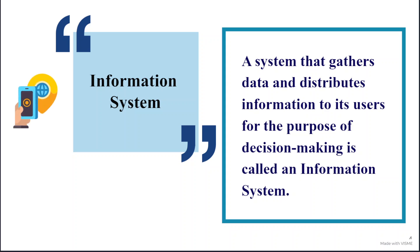Let me explain this using real-life examples. One major example is GPS, or any app that you use to find routes to a particular destination. It utilizes data that has been fed into the GPS app related to routes and traffic on the ground, and then processes that data to give you the information that out of all possible routes, this is the fastest one. Based on this information, you decide how to reach your destination.